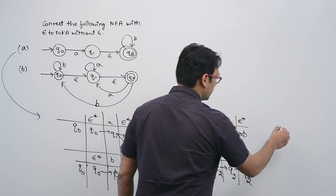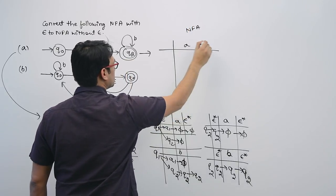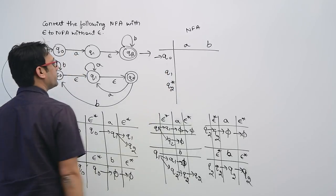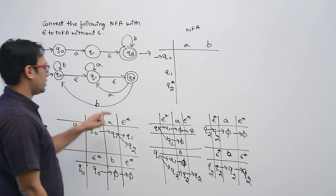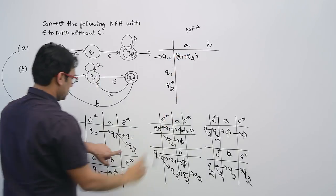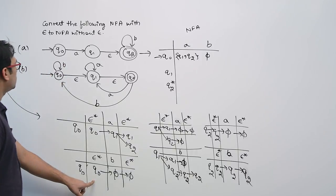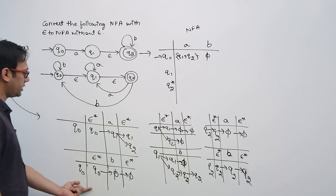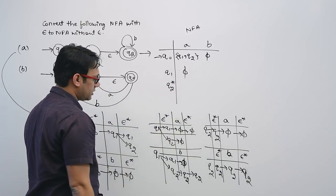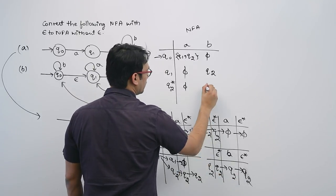Now let us make the transition table for the NFA. The states are Q0, Q1, Q2, where Q2 is the final state and Q0 is the initial state. The inputs are A and B. On Q0: symbol A → {Q1, Q2}; symbol B → phi. On Q1: symbol A → phi; symbol B → Q2.